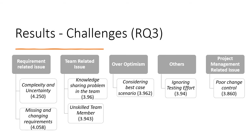For Research Question 3 — what are the reasons for inaccurate estimates in agile software development? — 20 factors were grouped into five categories: requirement-related issues, team-related issues, over-optimism, others, and project management-related issues. The most agreed-upon factors by highest mean value are: complexity and uncertainty under requirement-related issues; knowledge-sharing problems under team-related issues; considering best-case scenarios under over-optimism; ignoring test effort under others; and poor change control under project management. Results show only two significant differences based on respondent experience: poor user stories and poor change control.